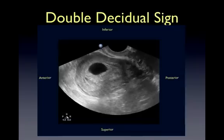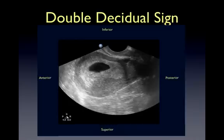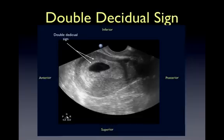The double decidual sign consists of two echogenic rings surrounding the anechoic gestational sac. The inner ring represents the chorion, embryonic disc, and decidua capsularis. The outer ring represents the decidua parietalis, also referred to as decidua vera. Where the two adhere is the decidua basalis, and this is the site of future placental formation.